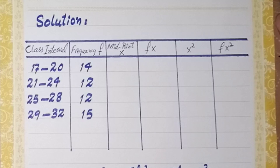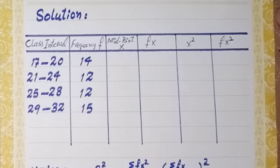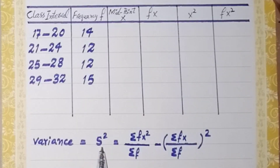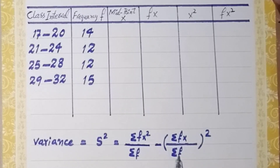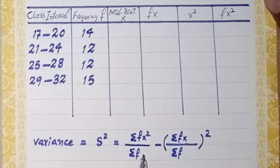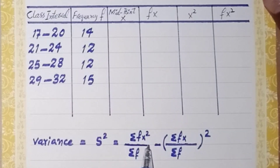We will identify which total values are required for the calculation of variance and standard deviation. Variance is equal to sigma fx² upon sigma f, minus the whole square of sigma fx upon sigma f. These are the total values required for the calculation, so first of all we will calculate these values and then put them into this formula.